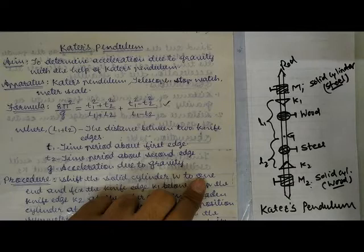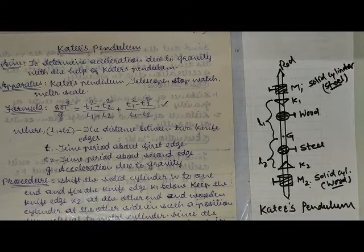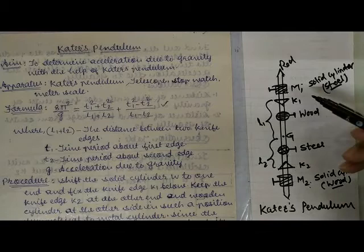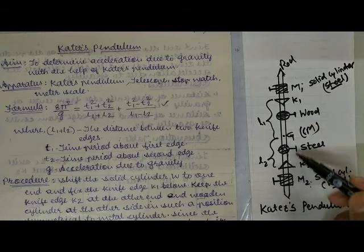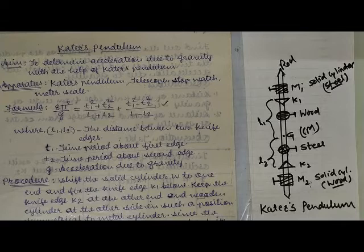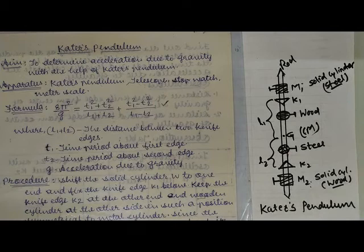We are going to see the Kater's pendulum physically; this diagram is just for the theoretical discussion. Just remember: we have three parameters on one side of the centre of mass and three parameters on the other side. The knife edges are the points about which we attach the Kater's pendulum and take the oscillations.